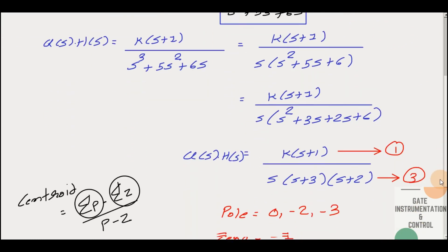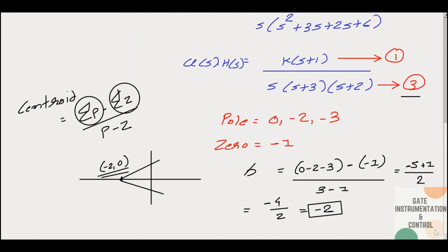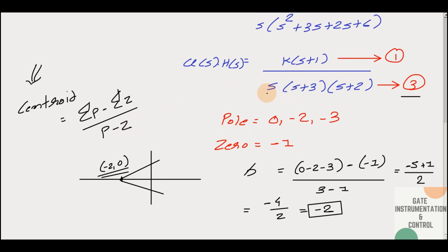If you have the transfer function directly available, you just need to apply the centroid formula: sum of real parts of poles minus sum of real parts of zeros, divided by number of poles minus number of zeros. The real parts of poles come from the denominator, and real parts of zeros come from the numerator.